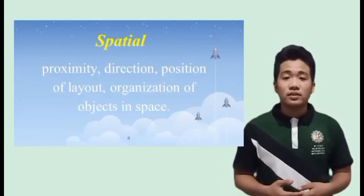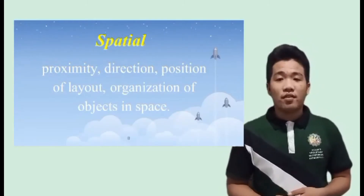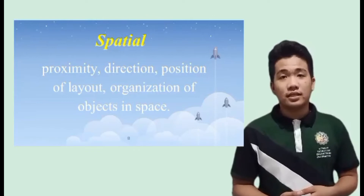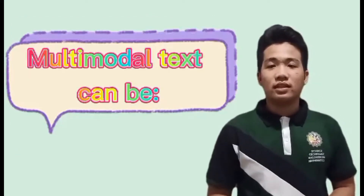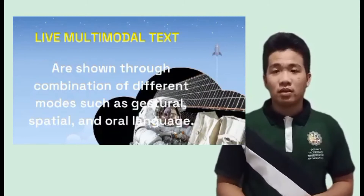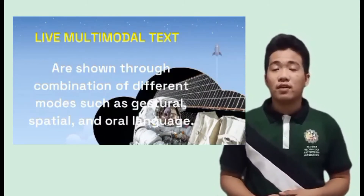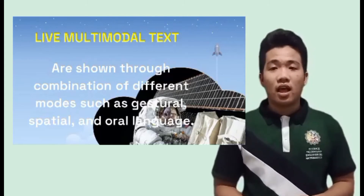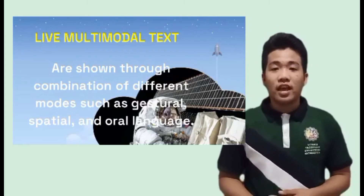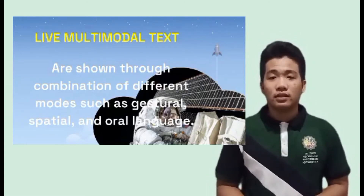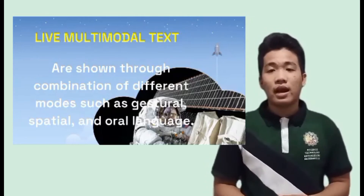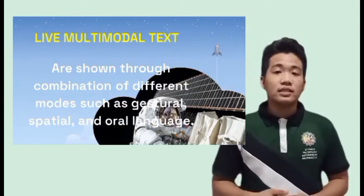The next and last element of multimodal text is spatial. It includes proximity, direction, position of layout, and organization of objects in space. Multimodal text can be live — live multimodal texts are shown through a combination of different modes such as gestural, spatial, and oral language. In other words, live multimodal text involves presentations in which both the performer and audience are physically present.